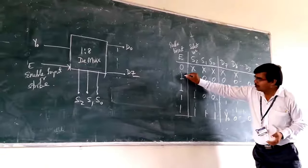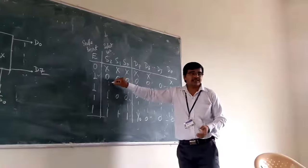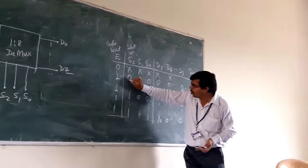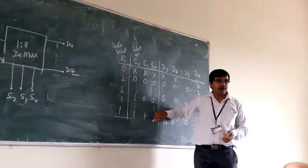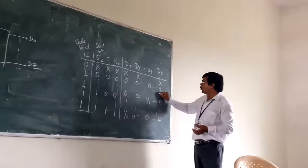When we are making your enable input as active, then we go for the select line. In select line, we can go from 0, 0, 0 to 1, 1, 1. So, when the select line is selected 0, 0, 0, then at the output, you will get D0.